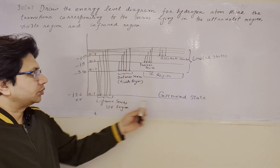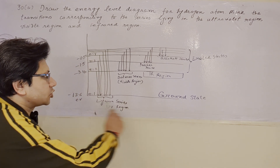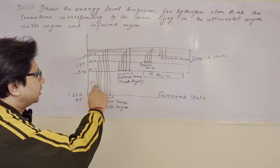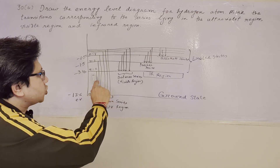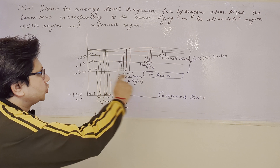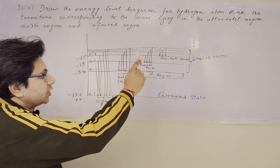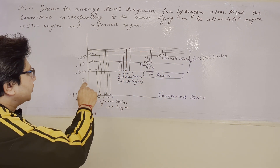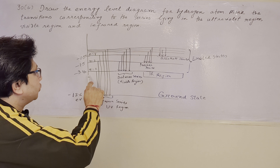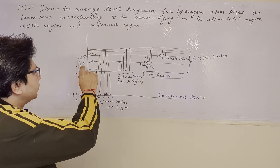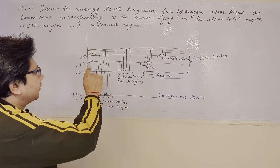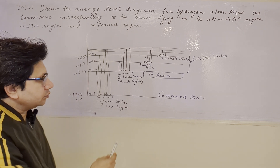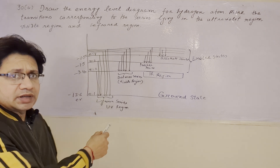This diagram shows the ground state at minus 13.7 electron volts, n equals to 1, then n equals to 2, n equals to 3, n equals to 4, and so on. These are the excited states having energies of 3.4, 1.5, 0.85, and so on in electron volts, and it shows the transitions.